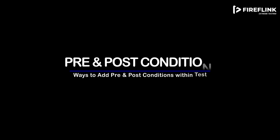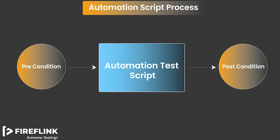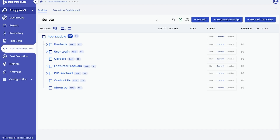In this video we will show you how to add pre and post conditions to your automation test scripts. Preconditions are the actions that need to be executed before the actual steps of the script, while post conditions are the actions that are executed after the actual automation steps. There are three ways to add pre and post conditions.